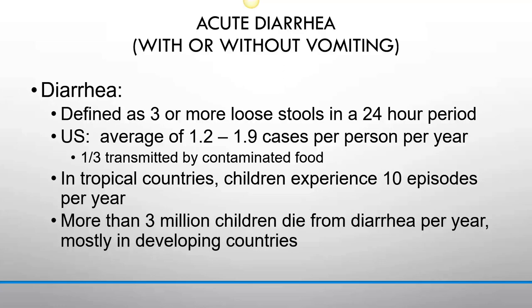Now, acute diarrhea with or without vomiting. Diarrhea is defined as three or more loose stools in a 24-hour period. In the United States, there are an average of 1.2 to 1.9 cases per person per year, and a third are transmitted by contaminated food. In tropical countries, children experience 10 episodes per year, and more than 3 million children die of diarrhea per year, mostly in developing countries.